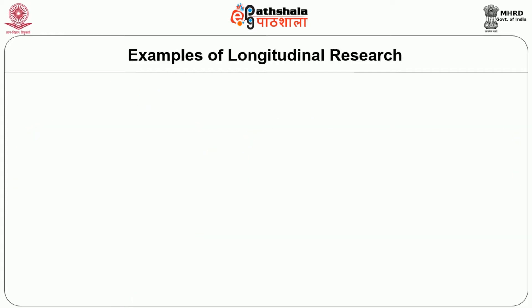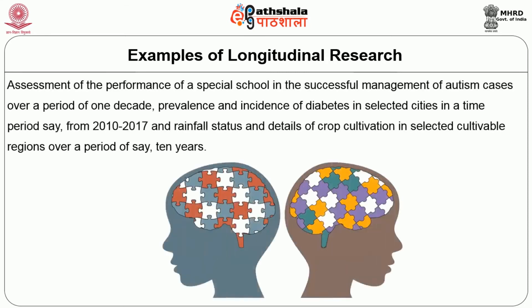Some good examples of longitudinal research are: assessment of the performance of a special school in the successful management of autism cases over a period of one decade; prevalence and incidence of diabetes in selected cities in a time period, say from 2010 to 2017; and rainfall status and details of crop cultivation in selected cultivable regions over a period of say 10 years.